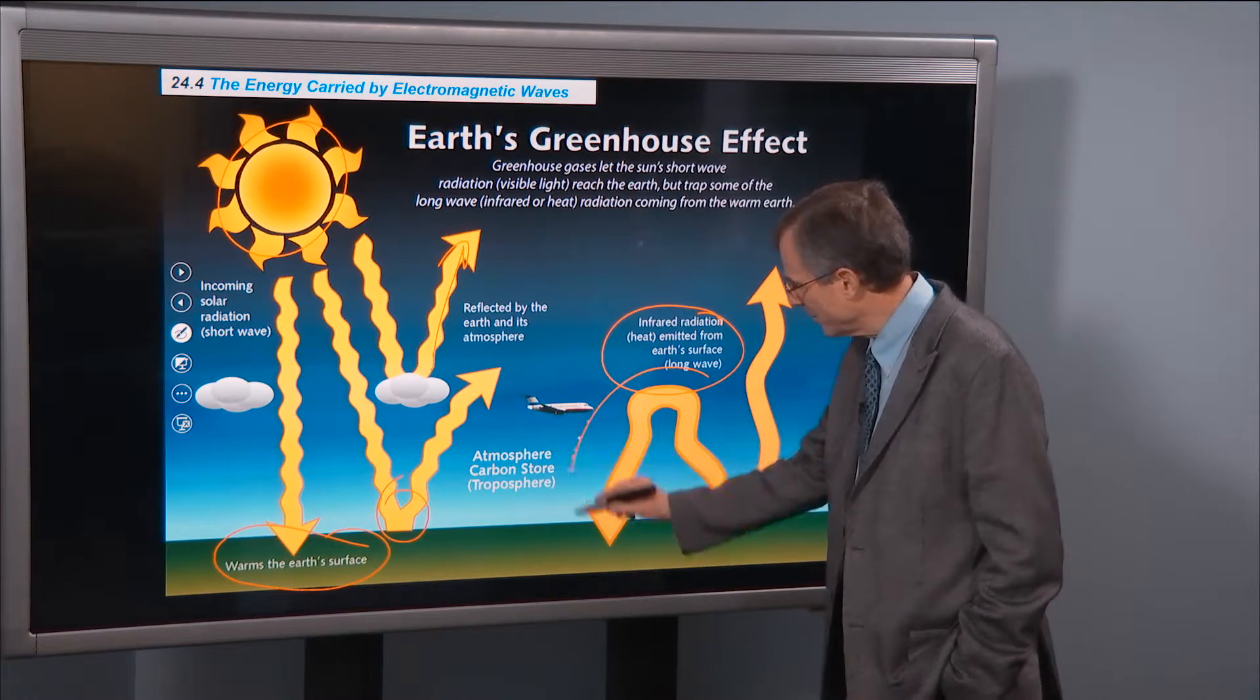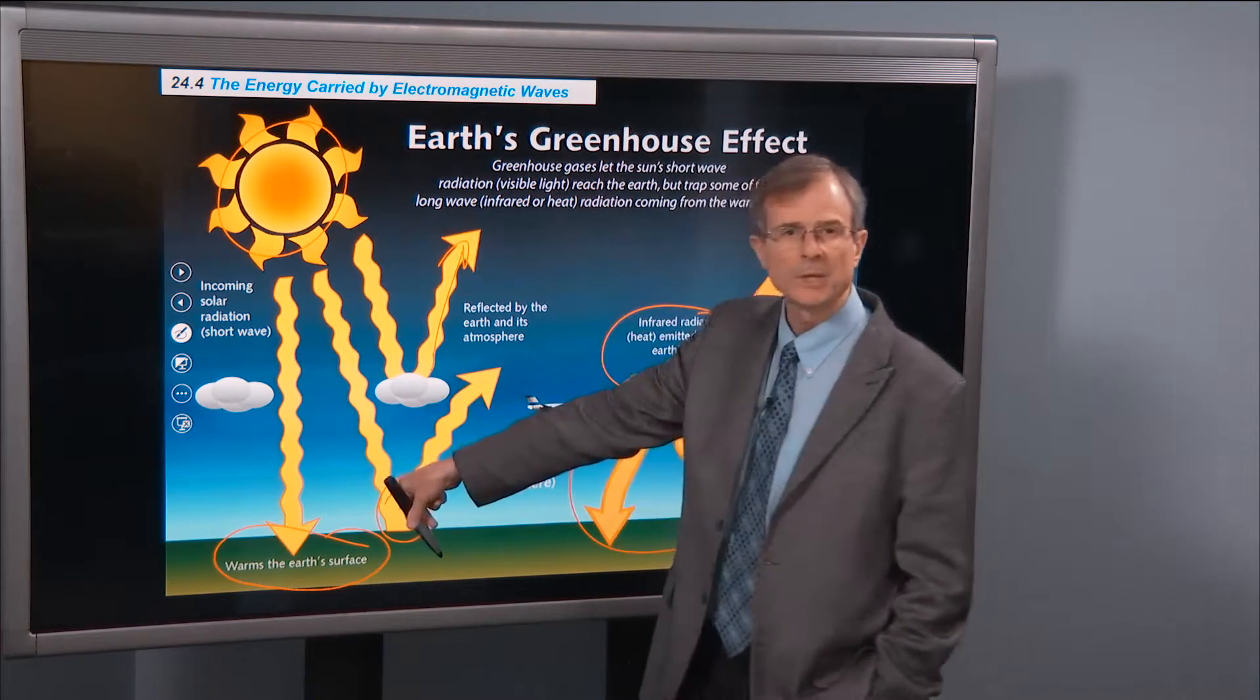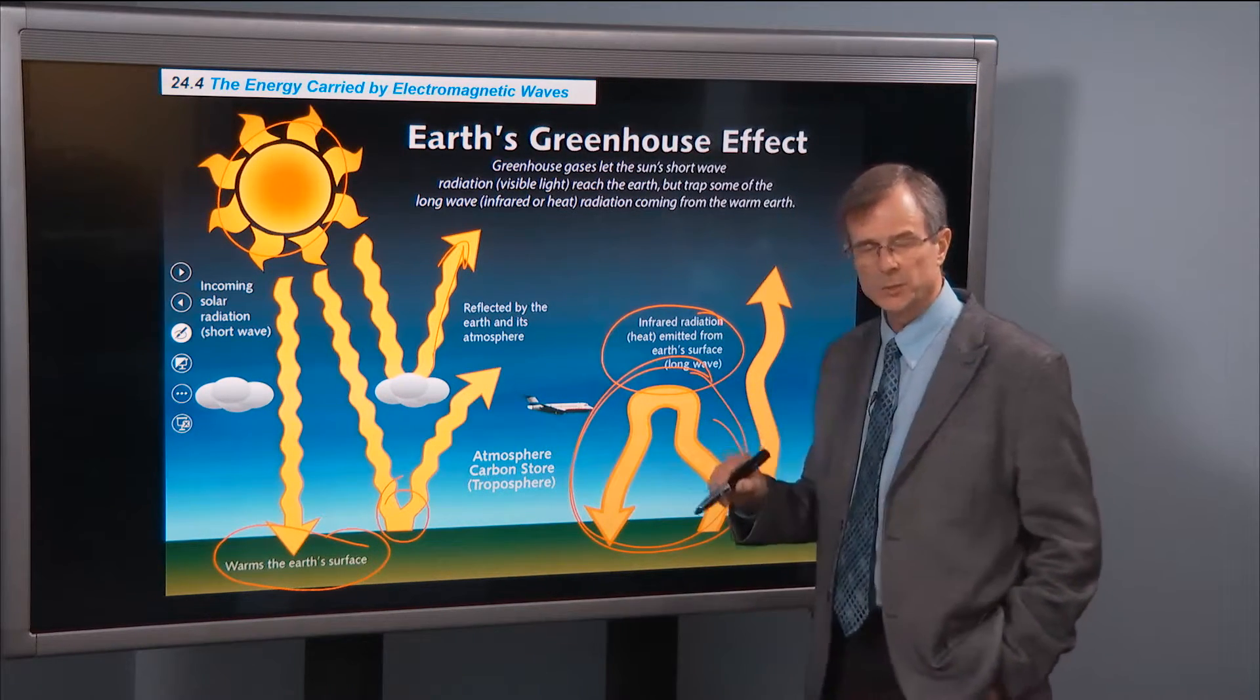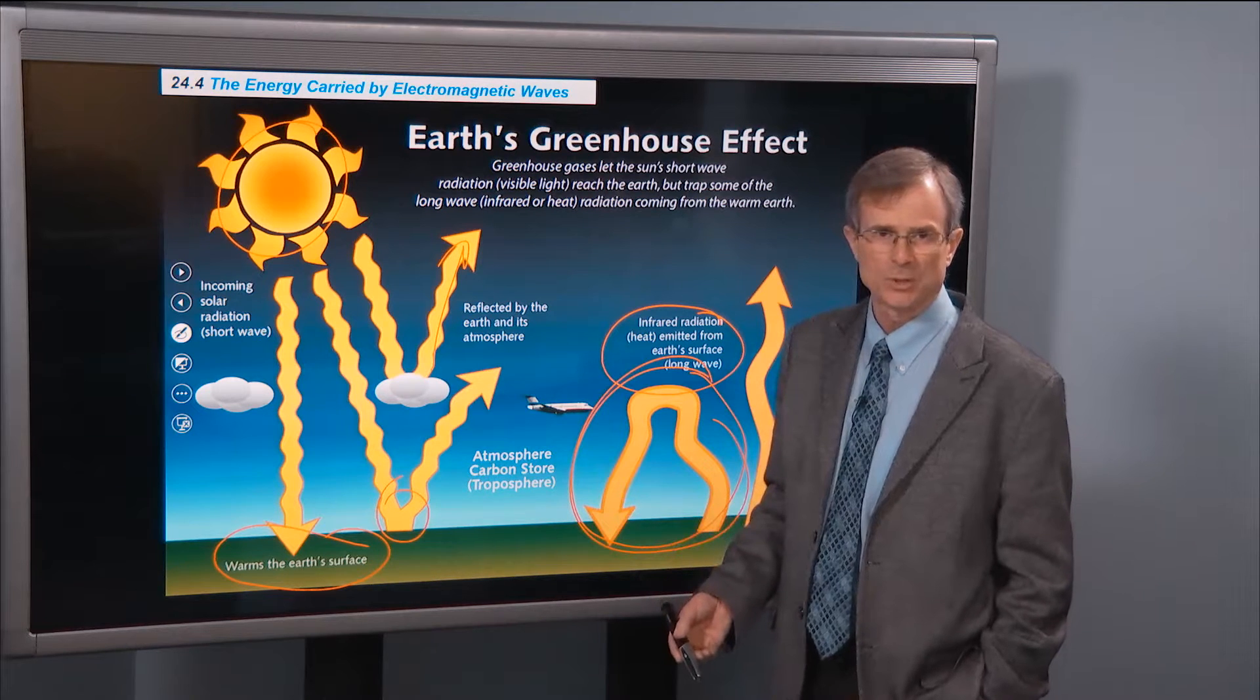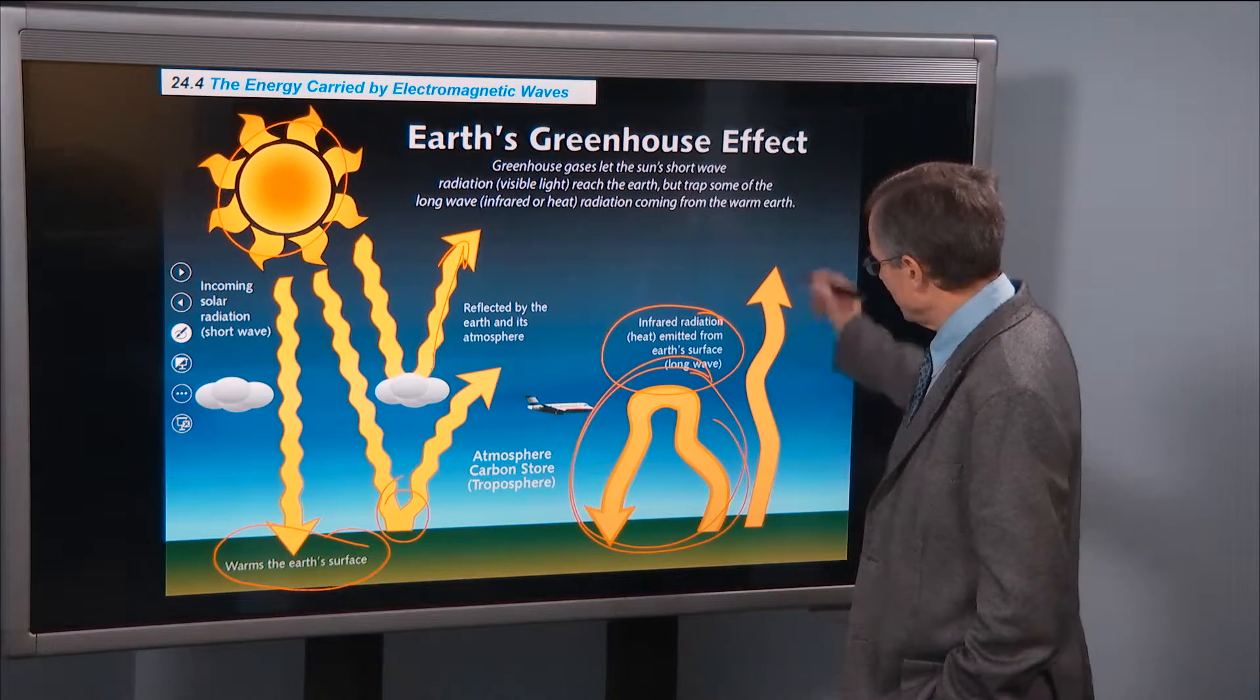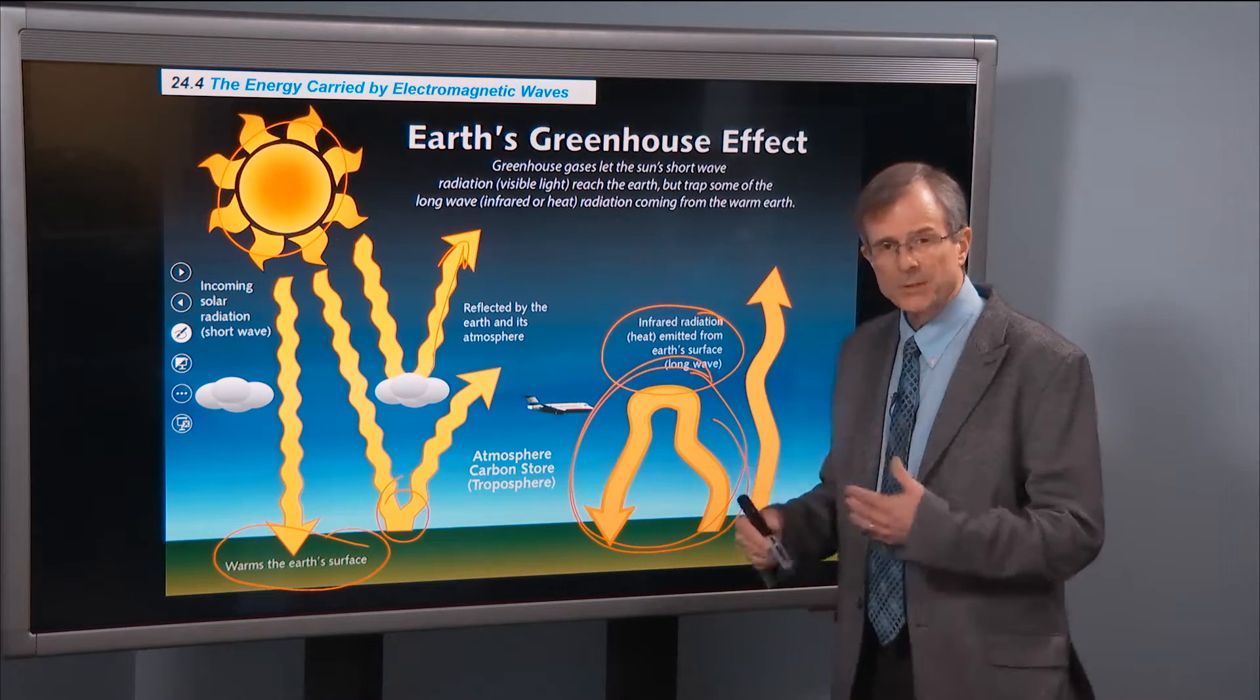So this infrared radiation, while the visible radiation is able to come in and heat the Earth's surface, the infrared radiation, a large portion of it, cannot get out. And some of it gets out, but a lot of it stays. That's the greenhouse effect,